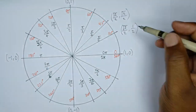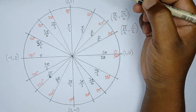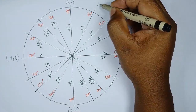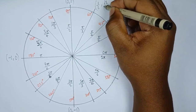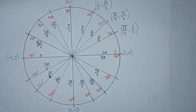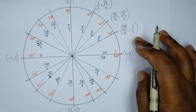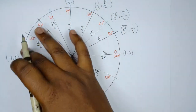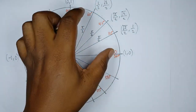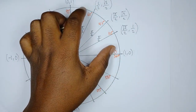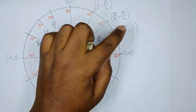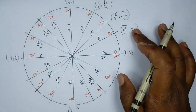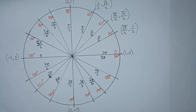At 60 degrees, cos 60 is 1/2 and sin 60 is root 3 over 2, giving the coordinate (1/2, root 3 over 2). These are the coordinates in the first quadrant. Remember, in the first quadrant cos is positive and sin is also positive, which is why all these coordinates are positive.